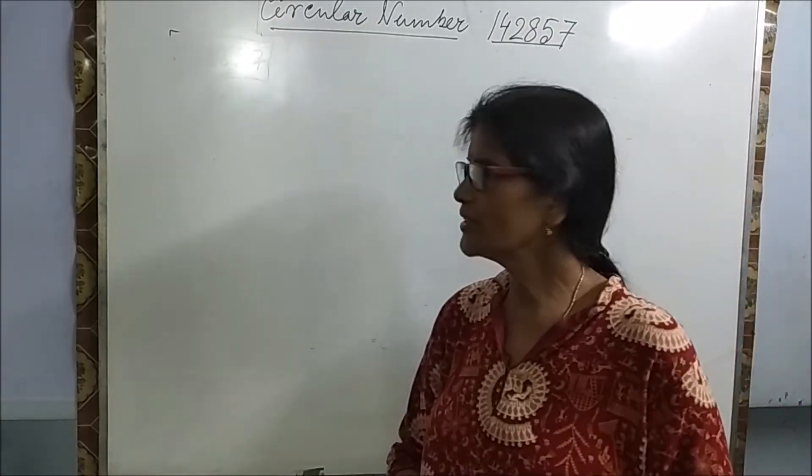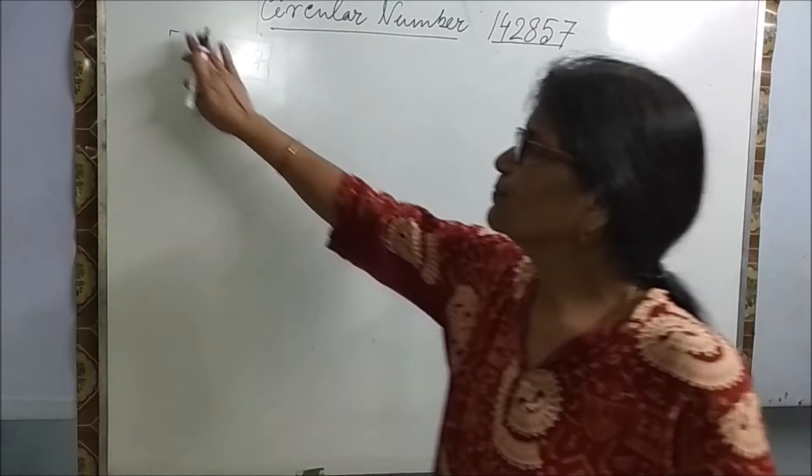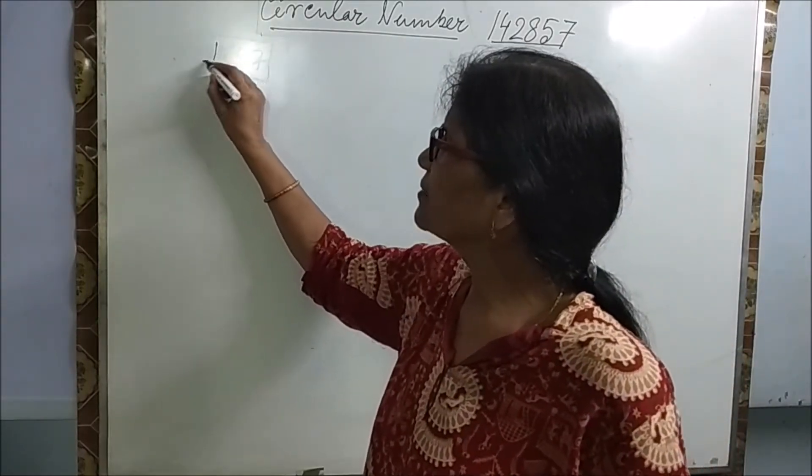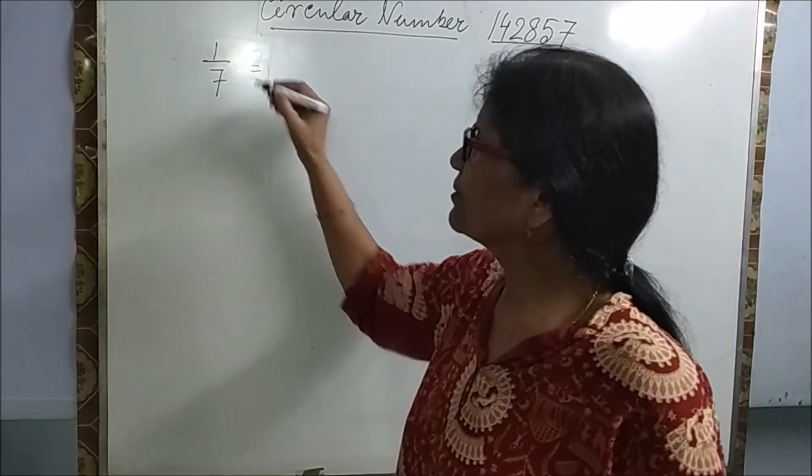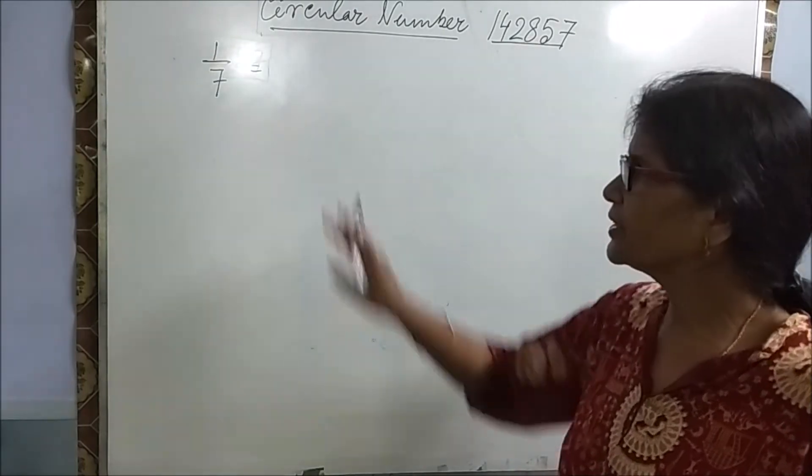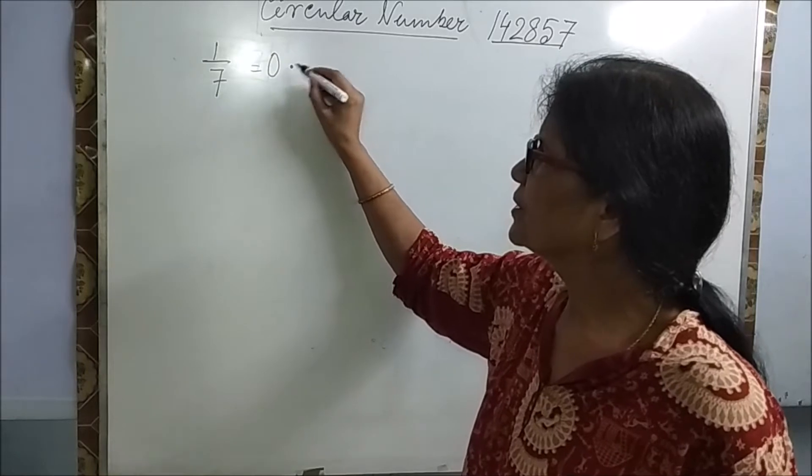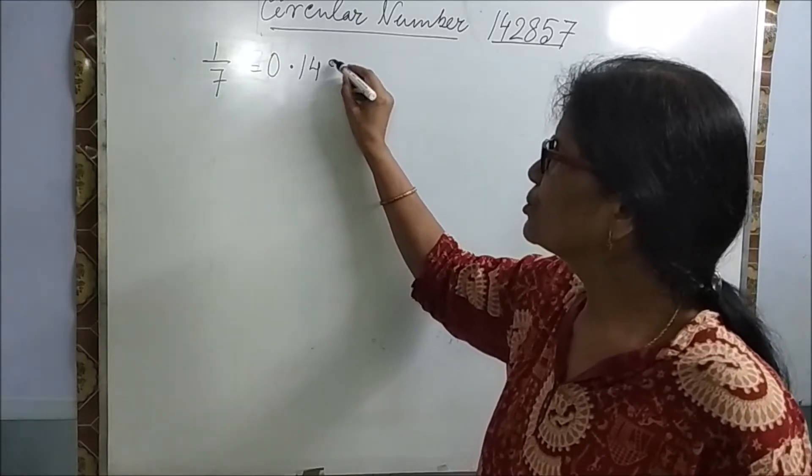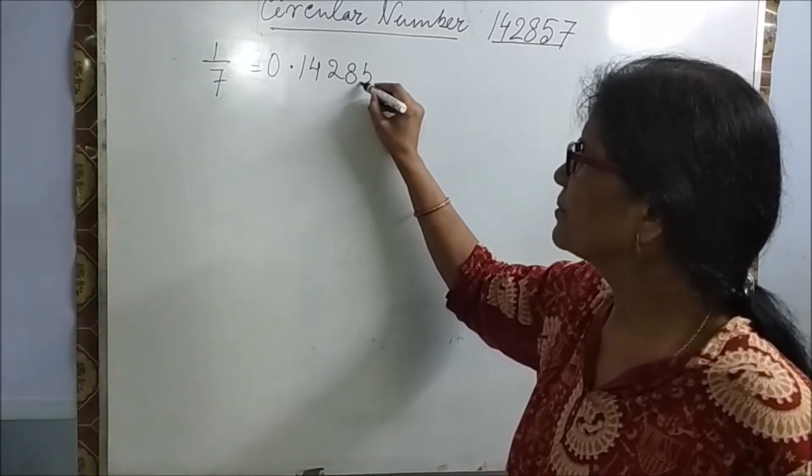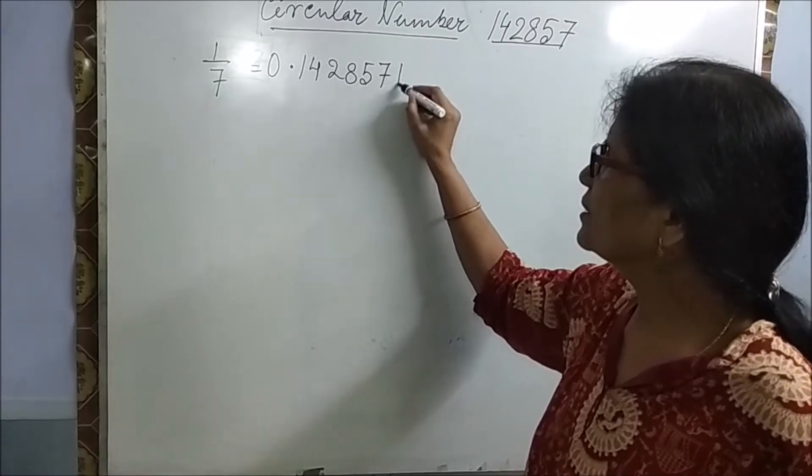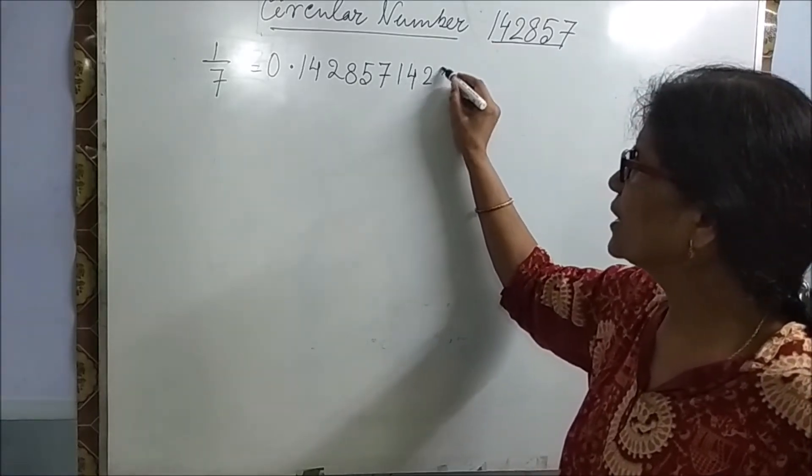So I am starting from 1 by 7. 1 by 7, you know if you divide and write in decimal expansion, on dividing it will be 0.142857.